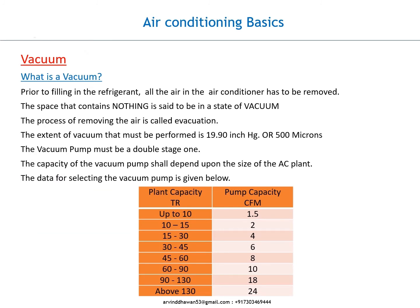What is a vacuum? Prior to filling in the refrigerant, all the air in the air conditioner has to be removed. The space that contains nothing is said to be in a state of vacuum. The process of removing the air is called evacuation. The extent of vacuum that must be performed is 19.90 inch HG or 500 microns. The vacuum pump must be a double-stage one; its capacity shall depend upon the size of the AC plant.